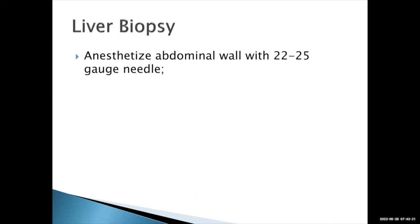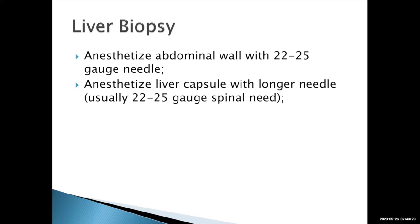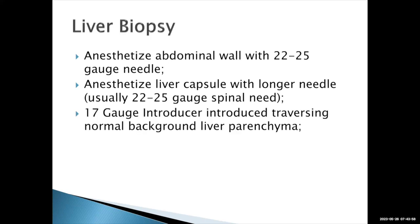We anesthetize the abdominal wall with a 22 or 25-gauge needle with lidocaine. Critically, we also anesthetize Gleason's capsule — sometimes using a longer spinal needle. The capsule itself is the most critical part of the anesthesia process because Gleason's capsule is highly innervated. Anesthetizing the capsule significantly reduces pain and discomfort during the procedure. We can use a 17-gauge introducer needle through normal background liver parenchyma. Going through normal liver, similar to a renal lesion, reduces the risk of bleeding.